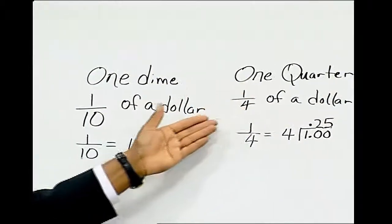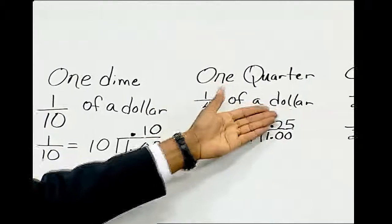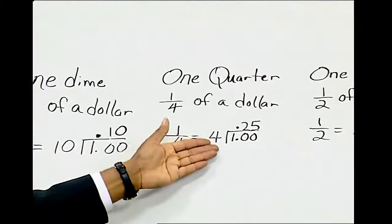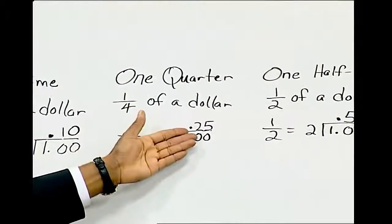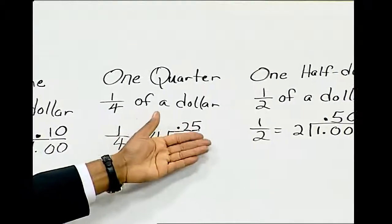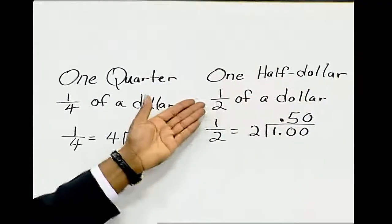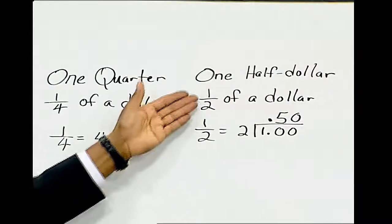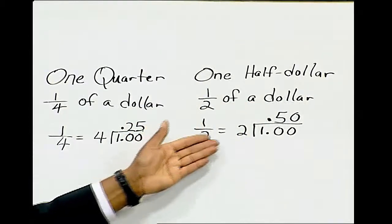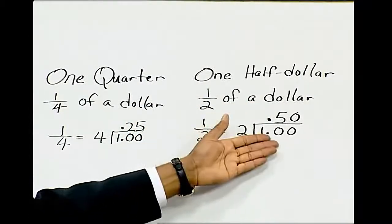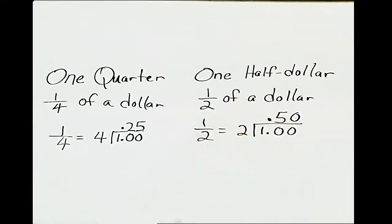One quarter is equivalent to 1/4 of a dollar. 1/4 — divide 4 into 1 dollar — is equivalent to 25 cents. One half dollar is equivalent to 1/2 of a dollar. 1/2 — divide 2 into 1 dollar — is equal to 50 cents.